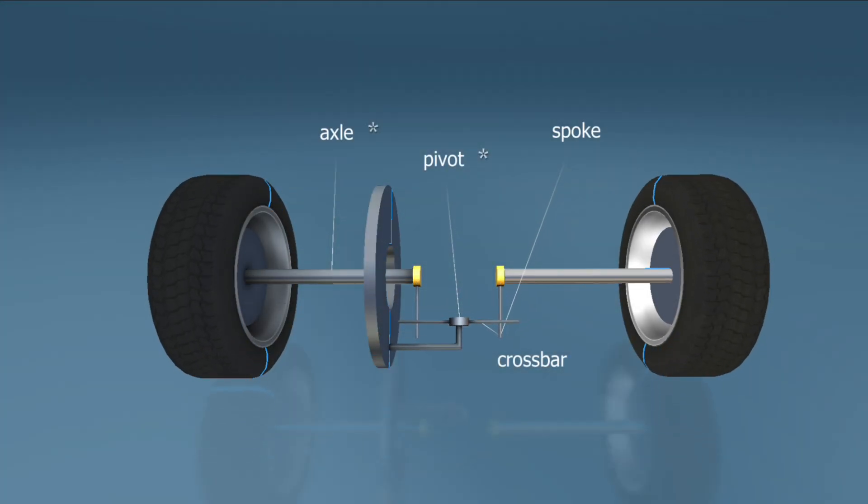When the crossbar is fixed on a pivot, it allows the crossbar to turn in either direction. This allows one wheel to turn even when the other is stationary. But if turned too far, the crossbar will lose contact with the spokes that turn the wheels.